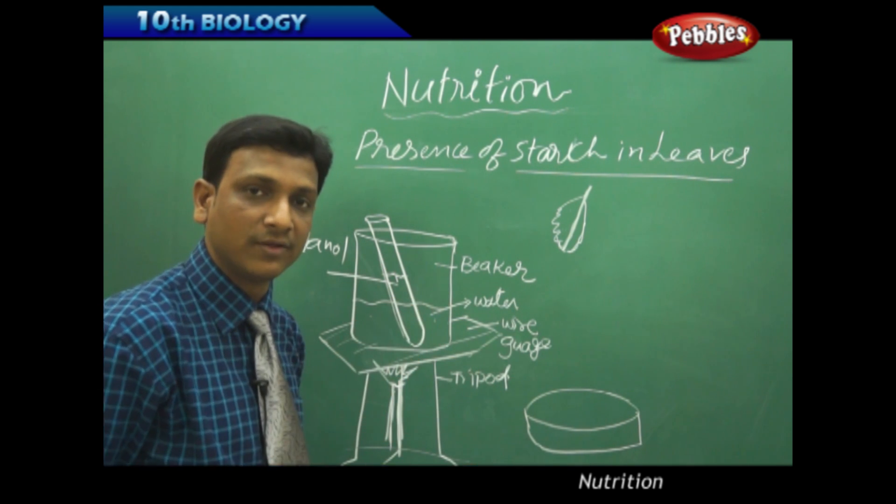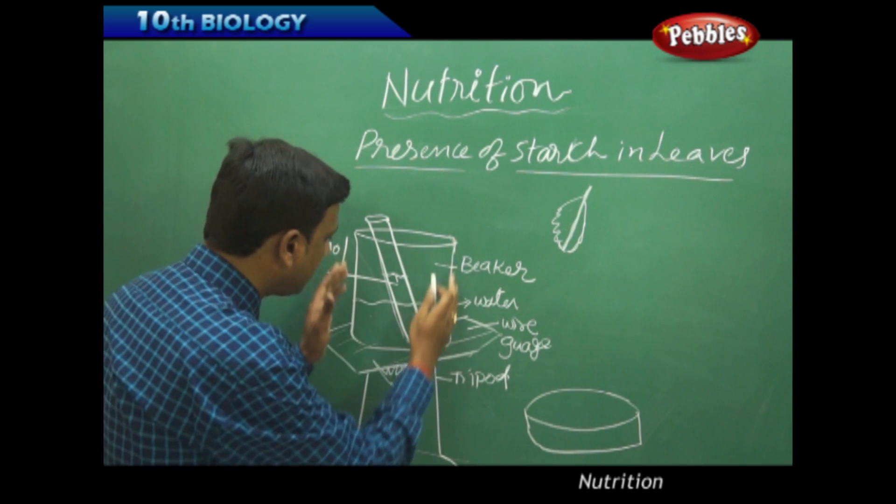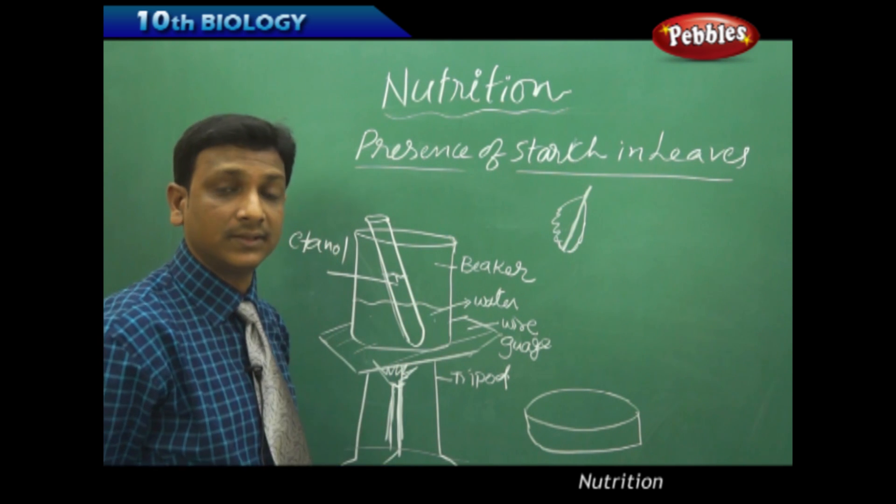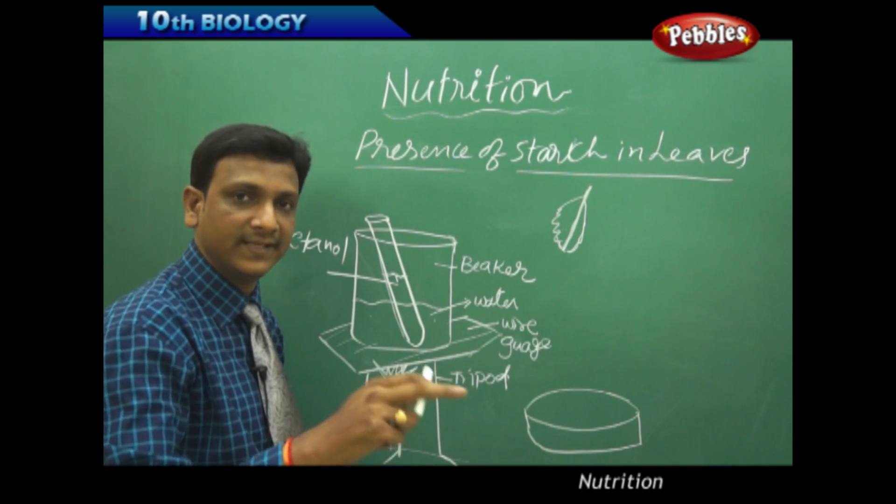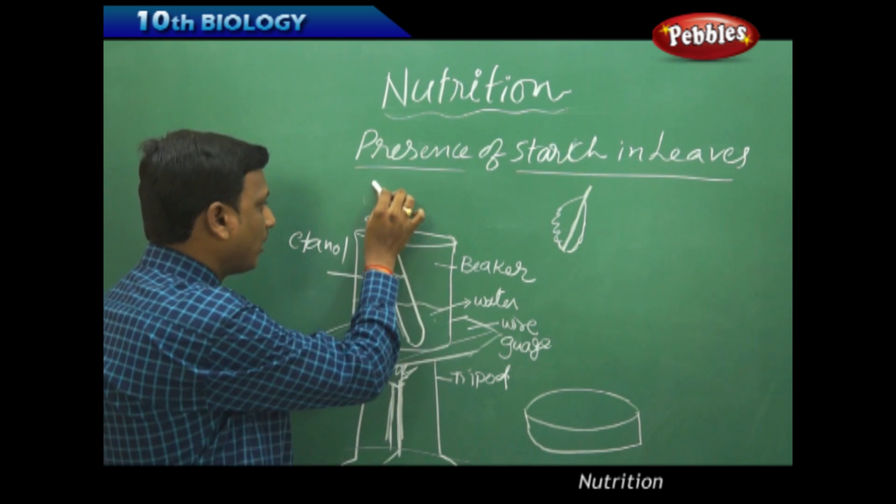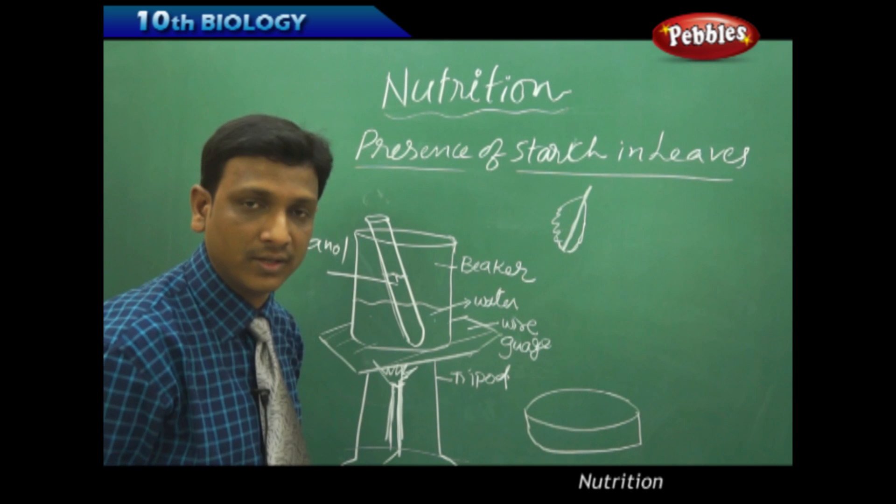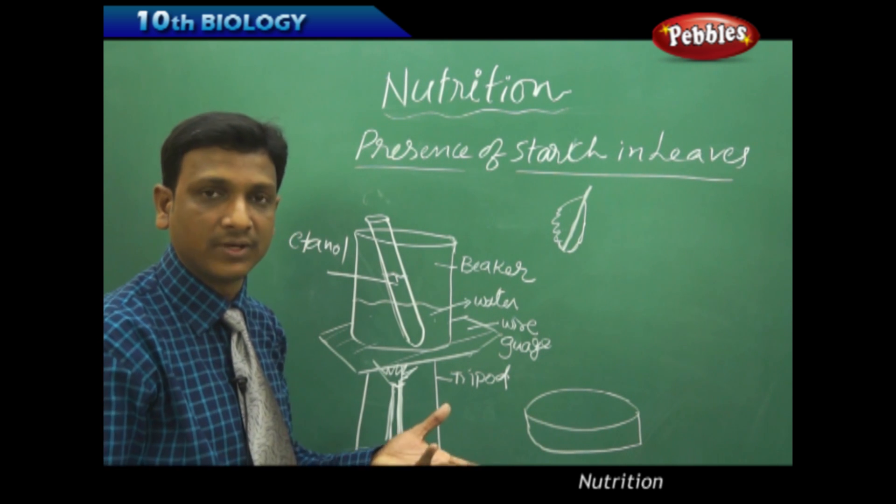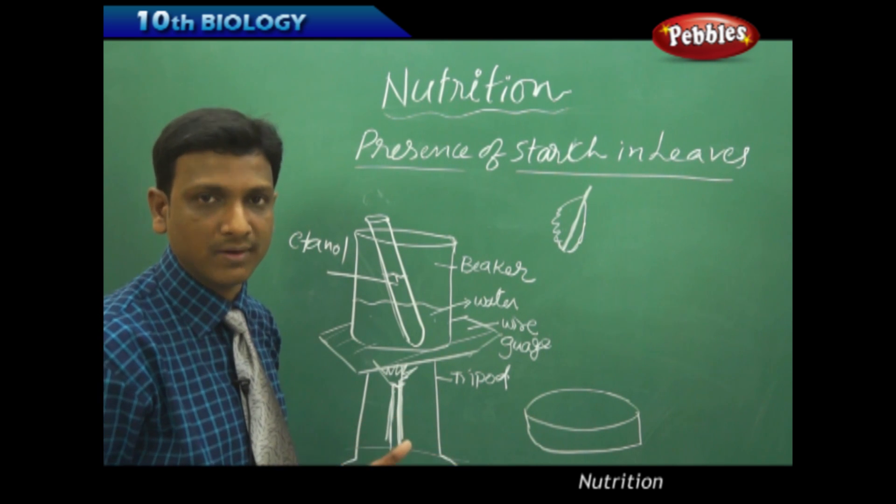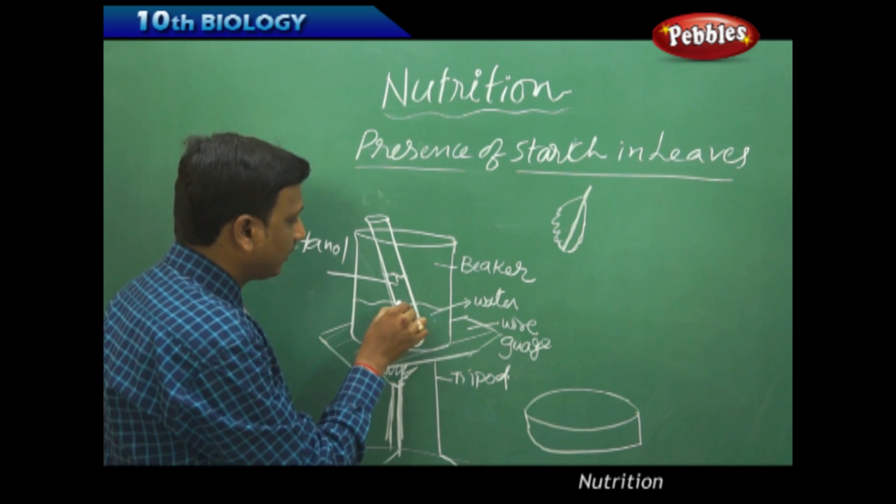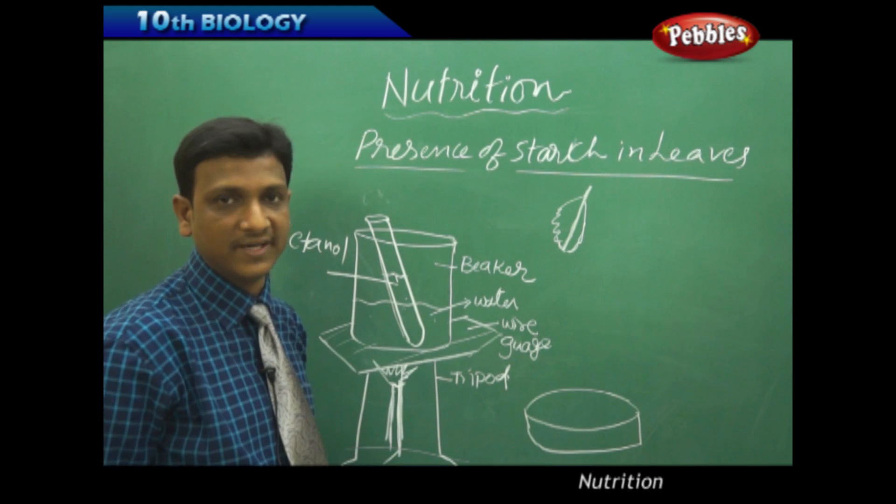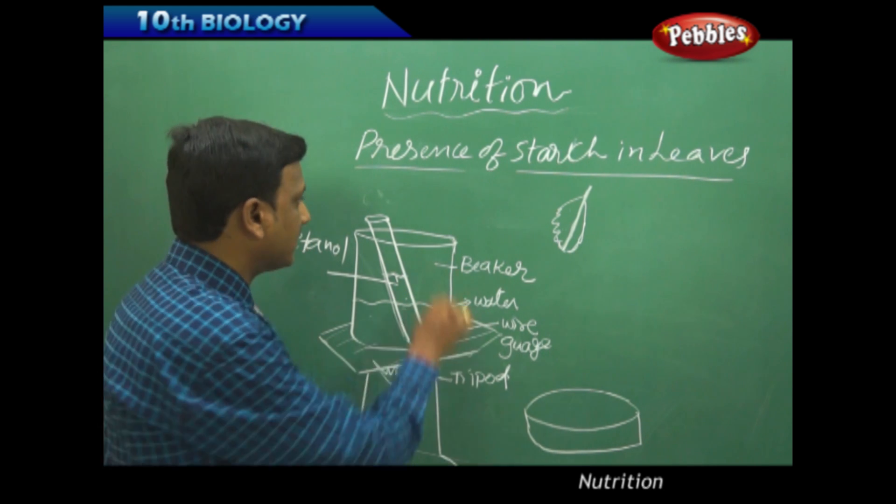Why can't we burn the test tube directly on the flame? Why do we need a beaker again and some water in that? Because if you directly heat the alcohol in the flame, the vapors of the alcohol may catch the fire and the whole thing may blast or catch fire. It is not advisable to burn this alcohol test tube directly on the flame.